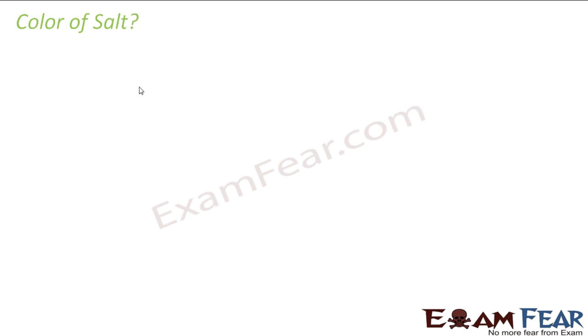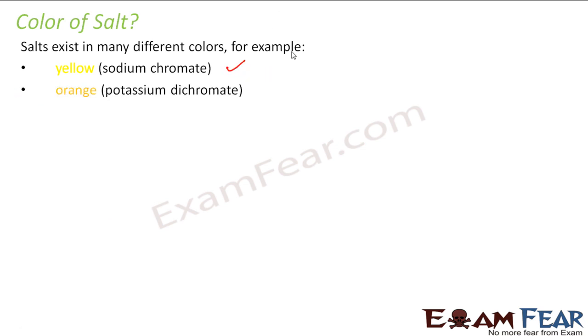Now what kind of color of salt. Whether it is blue, black or white. Let's see this. Salt can exist in different colors. For example, sodium chromate is a salt that is yellow in color. Potassium dichromate is orange in color. Potassium ferricyanide is red in color. Cobalt chloride is red in color.